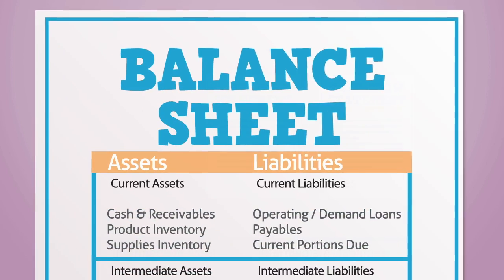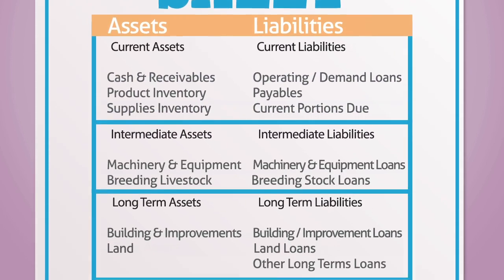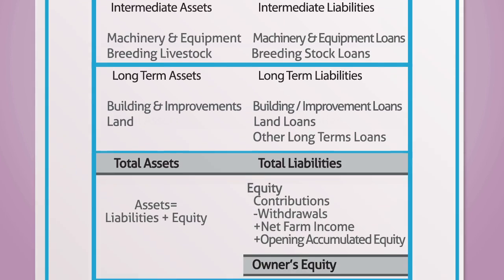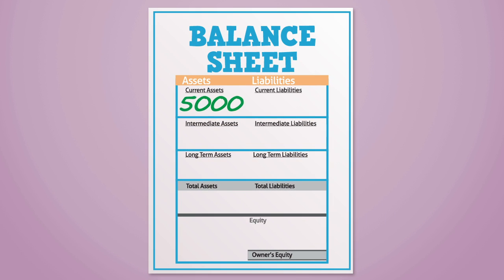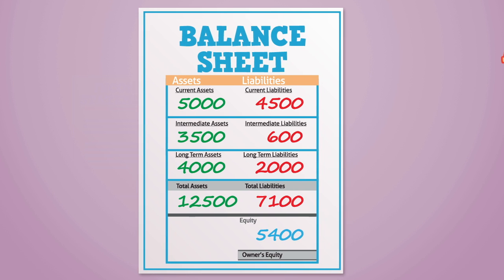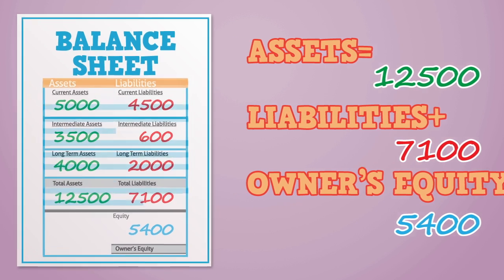The balance sheet is a financial statement that summarizes a company's assets, liabilities, and owner's equity at a specific point in time. The three balance sheet segments give a farm manager a snapshot as to what the farm owns and owes at a specific point in time. As the name implies, both sides must balance.